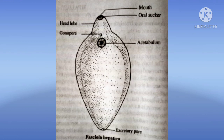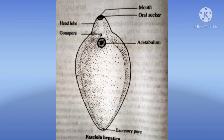Fasciola hepatica causes liver rot disease. Regarding morphological features, the body is dorso-ventrally flattened. The ventral sucker is called the acetabulum. It is an adhesive organ used for attachment to the host. At the posterior tip, there is an excretory opening called the excretory pore.